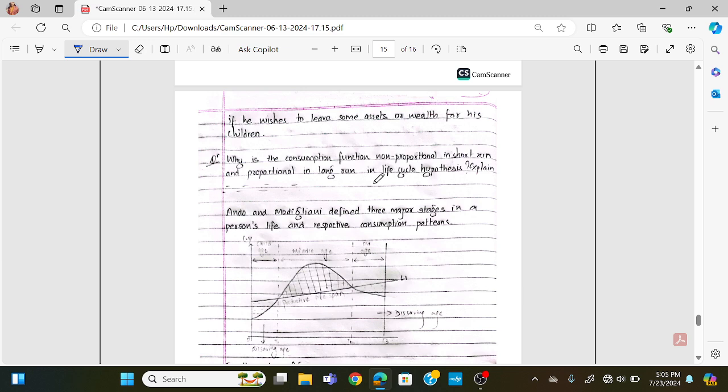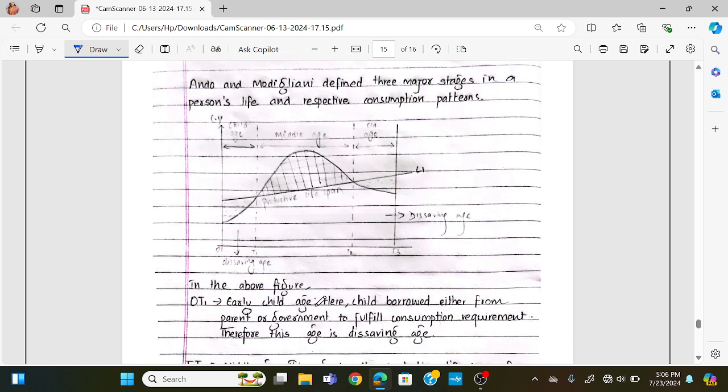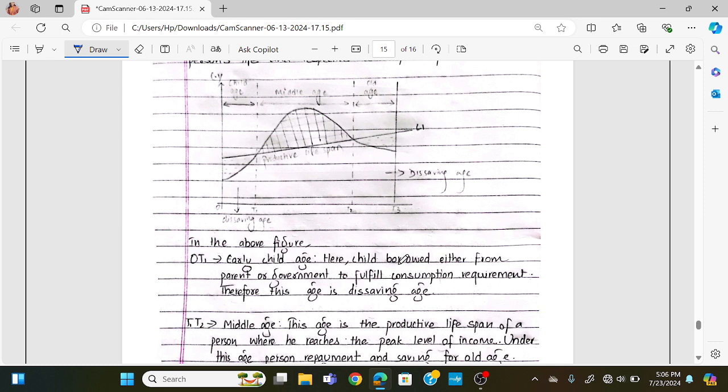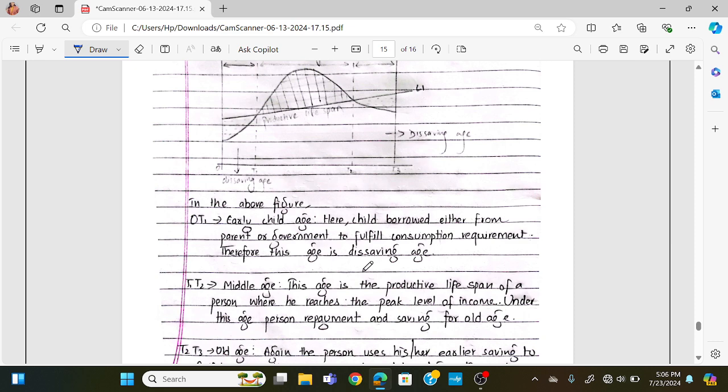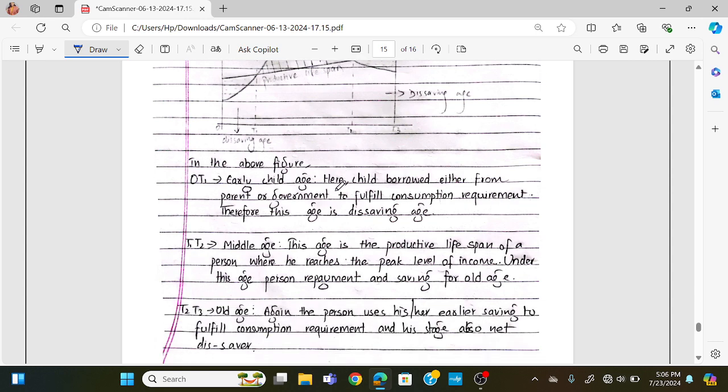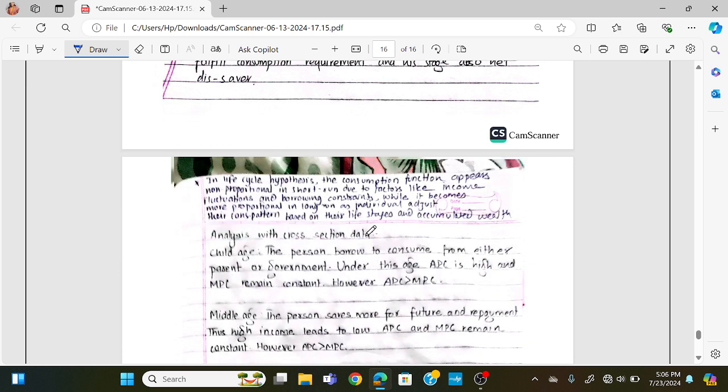The life cycle hypothesis divides life into three stages: early childhood age, middle age, and old age. In early childhood, individuals depend on parents' income. In middle age, which is the productive life span, individuals reach their peak level of income and are able to save. In old age, they dissave and use their accumulated savings.